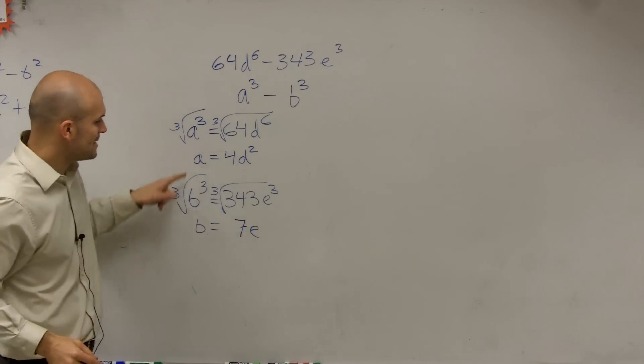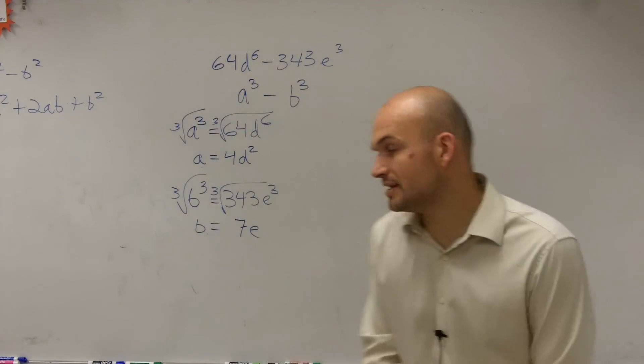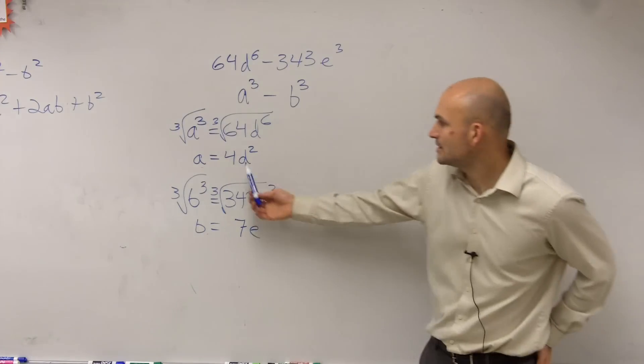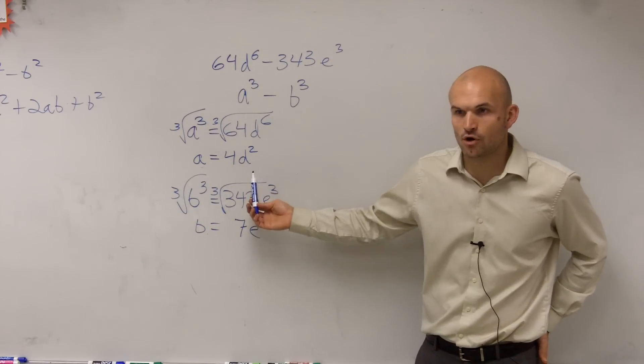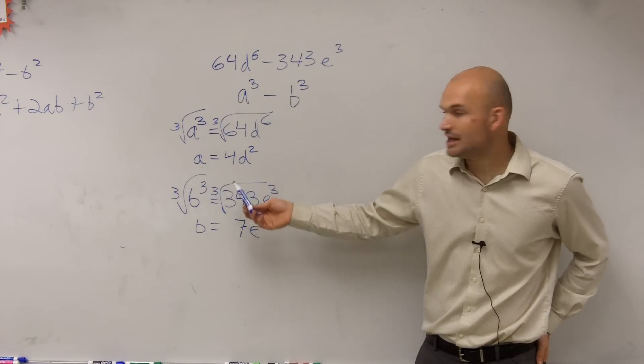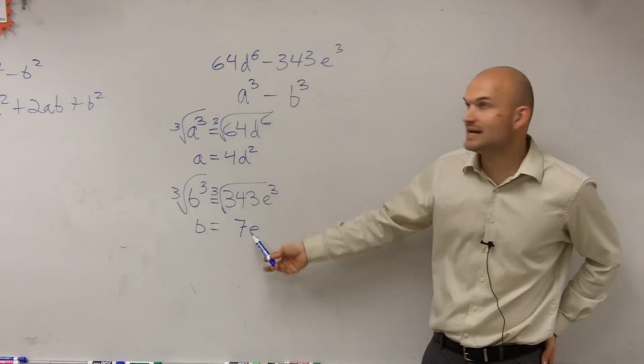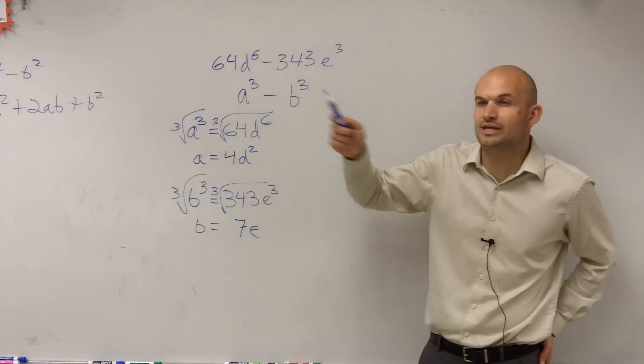So now I can say b and e are going to be 4 d squared is a. And b is going to be 7 e. Because if I cubed this form, right? If I cubed this, I'm going to get 64 d to the sixth. If I cubed this, I get 343 e cubed.